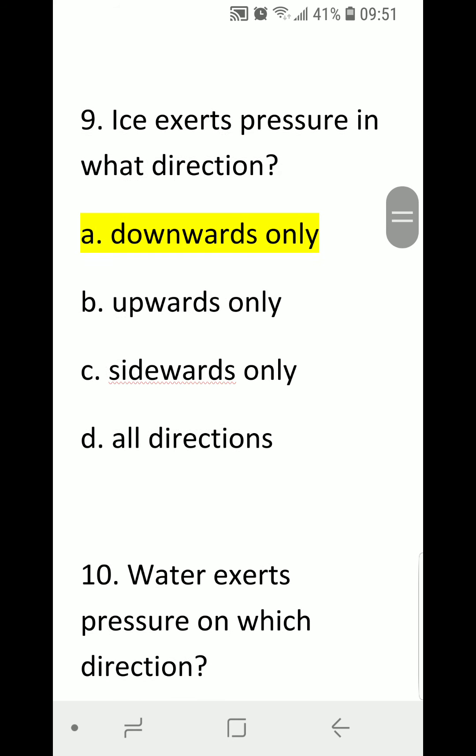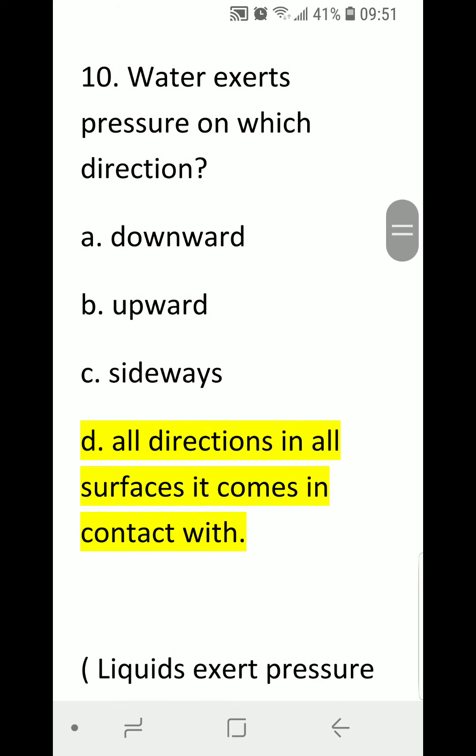Number nine: Ice exerts pressure in what direction? A) downwards only, B) upwards only, C) sidewards only, or D) all directions. The correct answer is A, downwards only. Number 10: Water exerts pressure on which direction? A) downward, B) upward, C) sideways, D) all directions. The correct answer is D, all directions in all surfaces it comes in contact with.